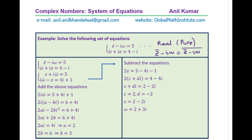Taking the conjugate of the left-hand side of equation one and applying the property that for a pure real number a equals a-bar, we get: Z plus i·(conjugate of Omega) equals 5. Call this equation three. Both forms are exactly the same since the right-hand side is the real number 5.